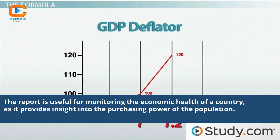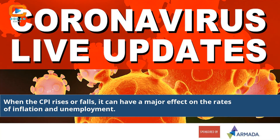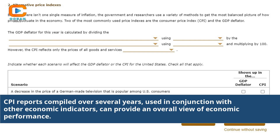The report is useful for monitoring the economic health of a country, as it provides insight into the purchasing power of the population. When the CPI rises or falls, it can have a major effect on the rates of inflation and unemployment. CPI reports compiled over several years, used in conjunction with other economic indicators, can provide an overall view of economic performance.